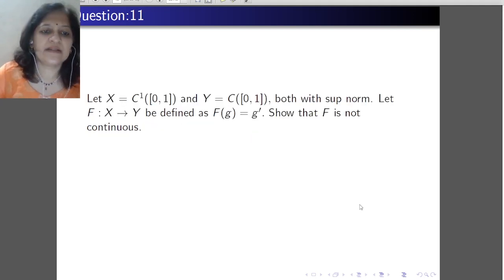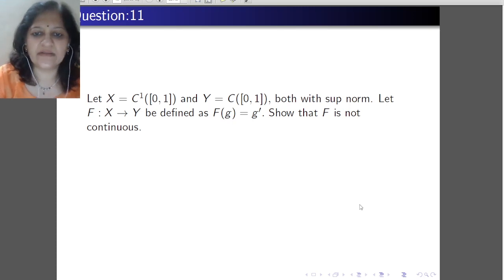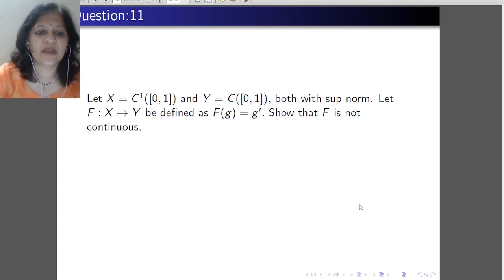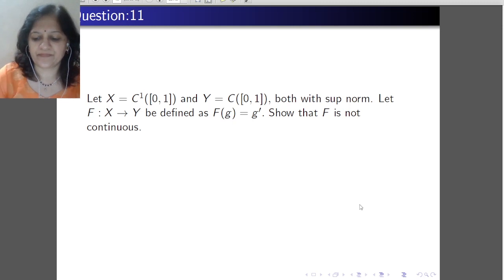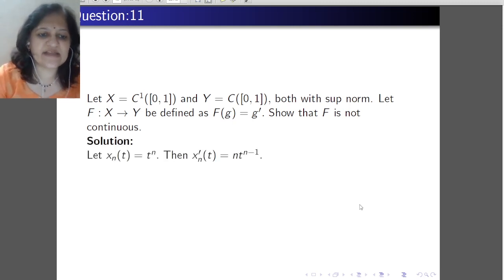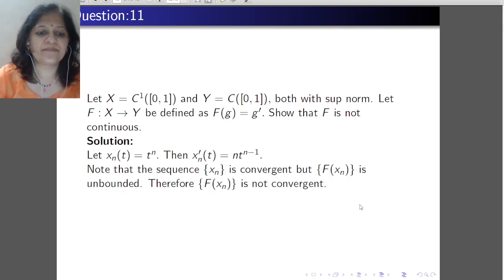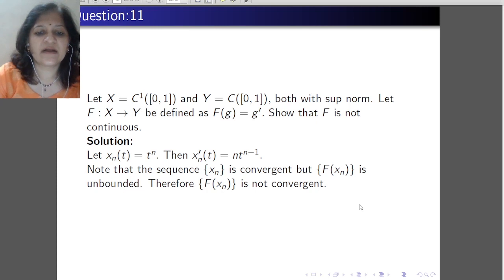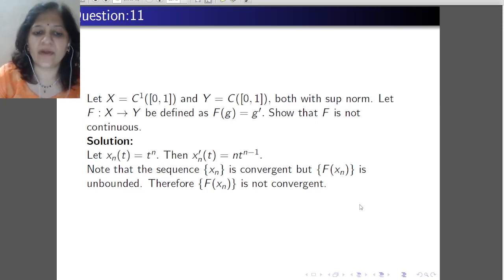Let X be the space C1[0,1] and Y be C[0,1], both with the sup norm. Let f from X to Y be defined as f(g) = g'. Show that f is not continuous. C1[0,1] is the space of all functions whose derivative is also continuous, and C[0,1] is the space of continuous functions on [0,1]. Consider the sequence xn(t) = t^n. Then xn'(t) = n·t^(n−1). Note that the sequence xn is convergent, but f(xn) is unbounded since ‖f(xn)‖ = n, which is unbounded. So the sequence f(xn) is not convergent, meaning f is not continuous.